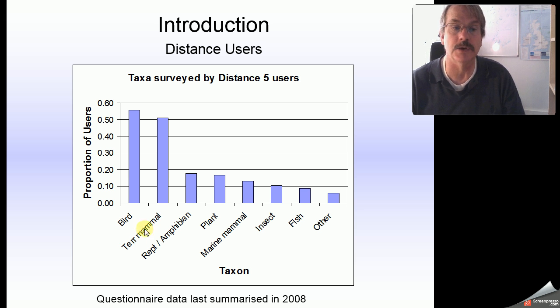Another large fraction work on terrestrial mammals, and a variety of other things, including insects, fish, amphibians, reptiles, and a variety of other things.